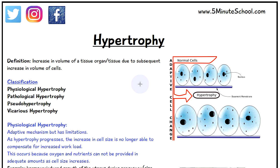Welcome to Five Minute School. Today's video will be talking about hypertrophy, which is where we have an increase in the volume of a tissue or organ. That happens because of an increase in the volume of the cells which make up that tissue or organ. The diagram on the right shows the structure of normal cells, and in hypertrophy we can see that the cells have much larger volumes in comparison. We can classify hypertrophy in four different ways.